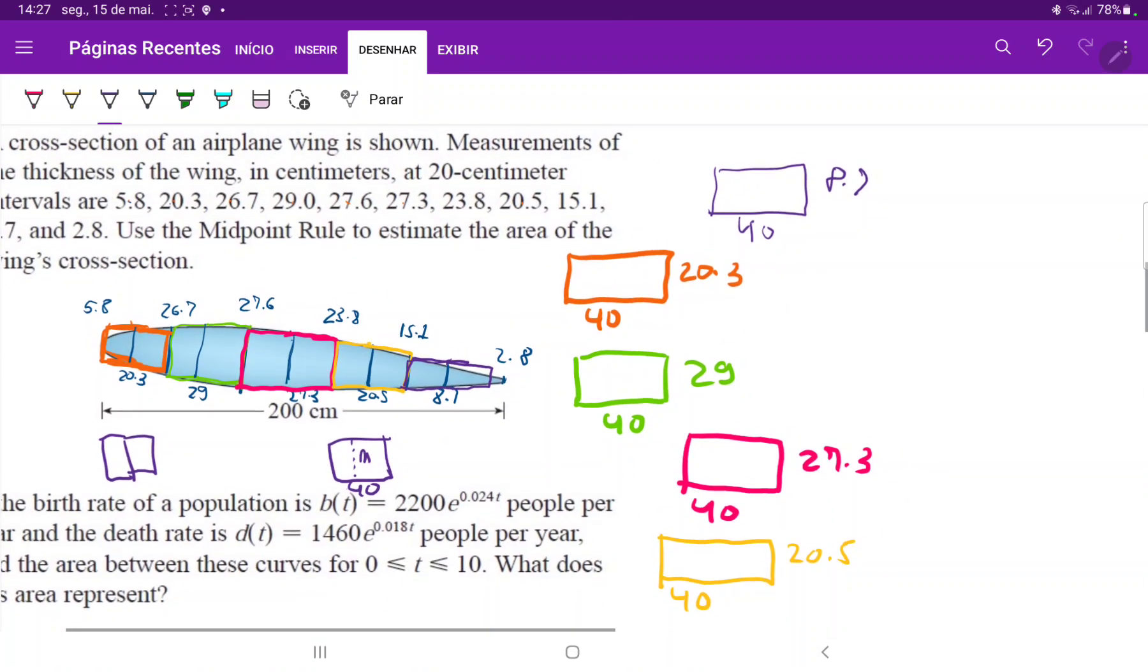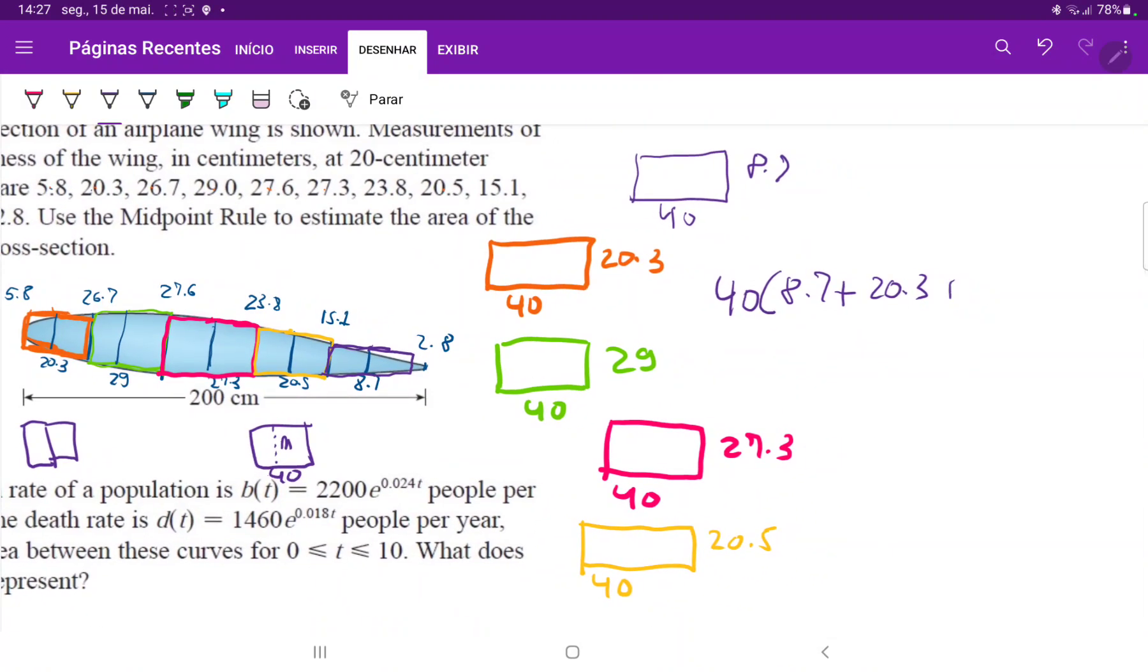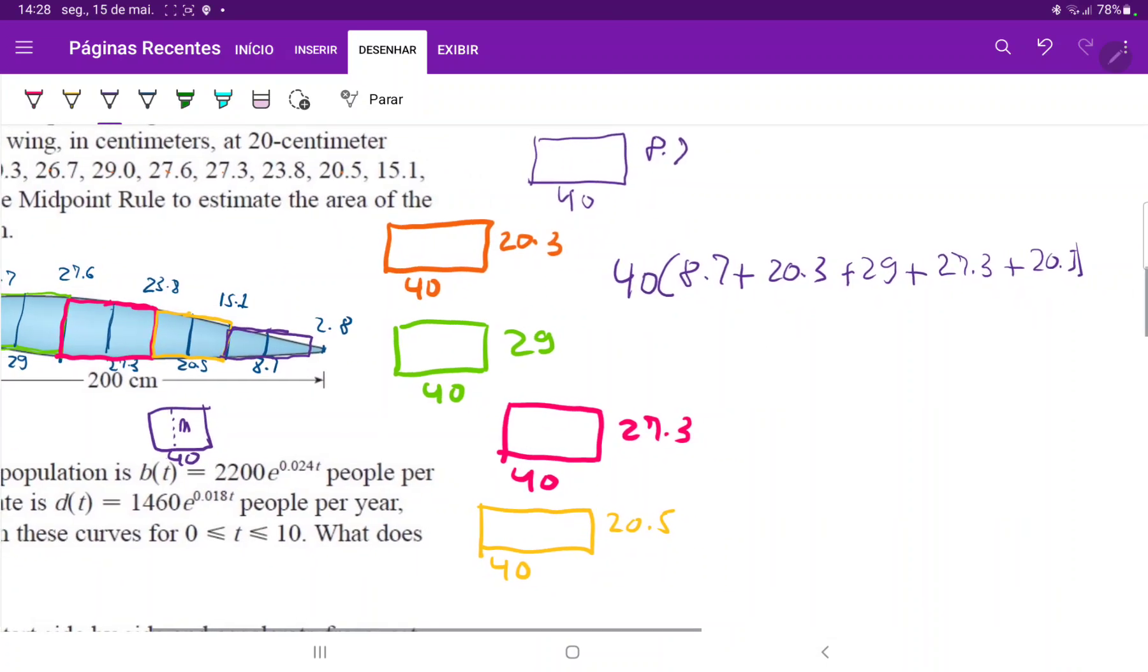So all we have to do is we have to add these up. So let's factor out 40 because they all have 40 in common. And then that is 8.7 plus 20.3, plus 29 plus 27.3, plus 20.5. So when we calculate this, while my handwriting is terrible, this is 40 times, let's add this up, 8.7 plus 20.3 plus 29 plus 27.3 plus 20.5.